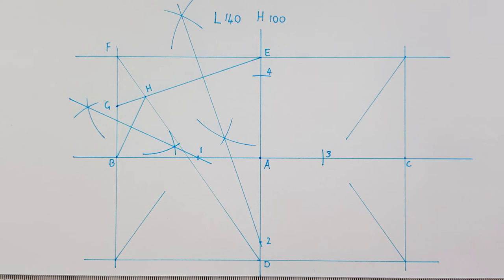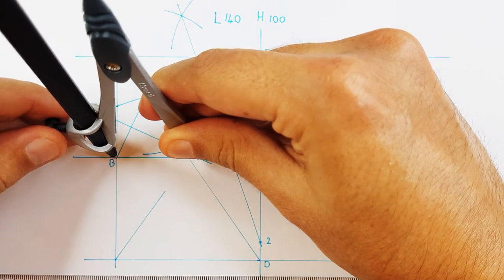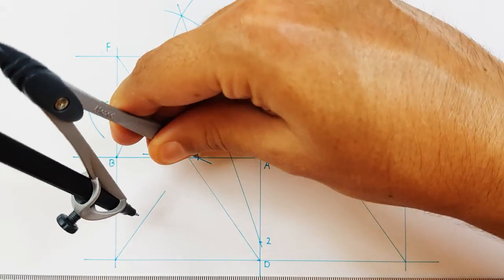To draw my ellipse, I need to place my compass on point 1 and adjust it to point B. This radius will be used to draw the sides of my ellipse.